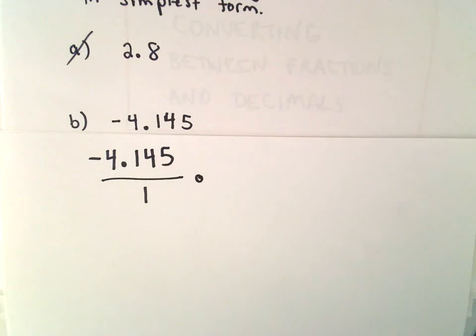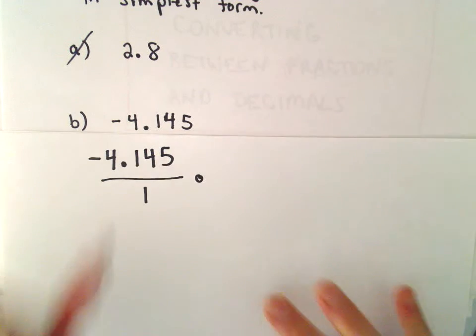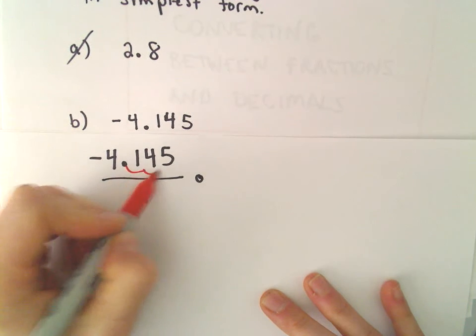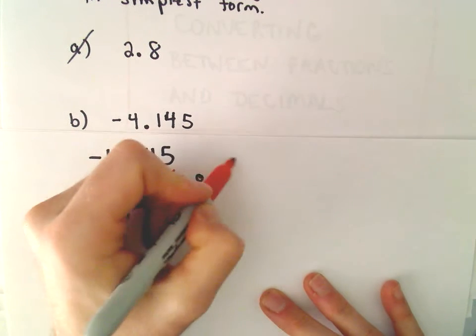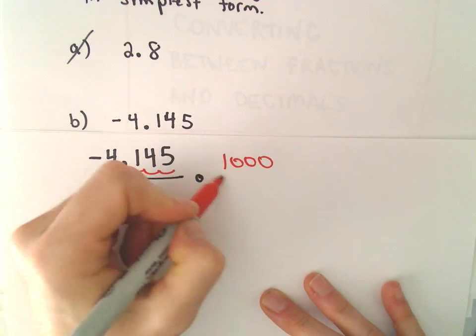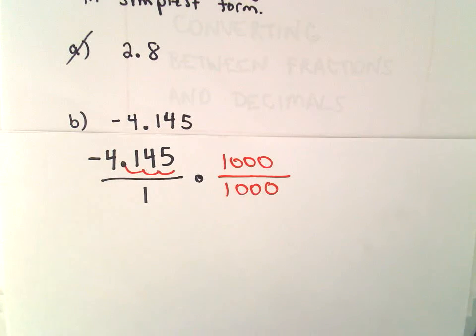Okay, same idea, let's get rid of the decimal sign. It looks like we'd have to move it three times, so I'm going to multiply by 1,000 over 1,000.